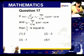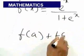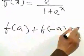f(x) equals e to the power x by 1 plus e to the power x. Therefore, f of a plus f of minus a is equal to 1.